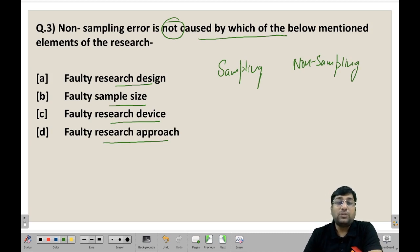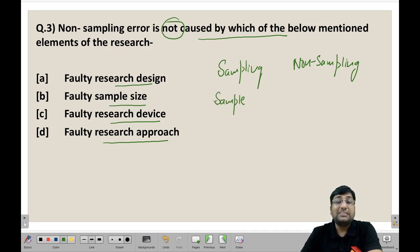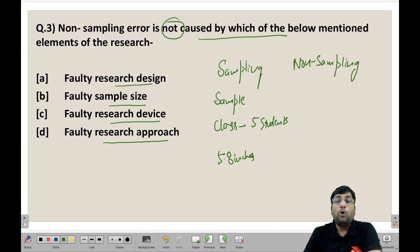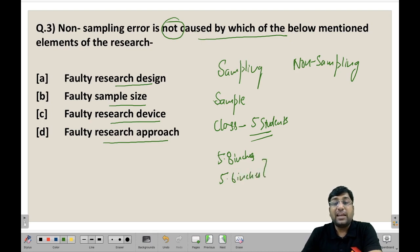Sampling error occurs when we use a sample instead of the whole population. For example, if we want to know the average height of a class, we measure 5 students instead of everyone. If the whole class average is 5 feet 8 inches but our sample of 5 students gives 5 feet 6 inches, the difference of 2 inches is the sampling error.